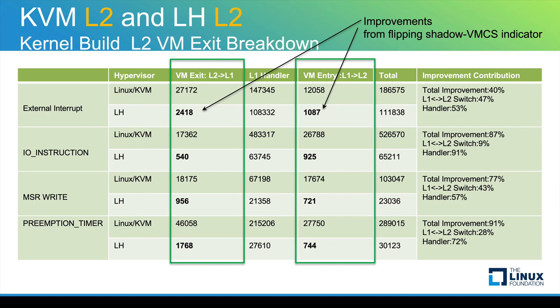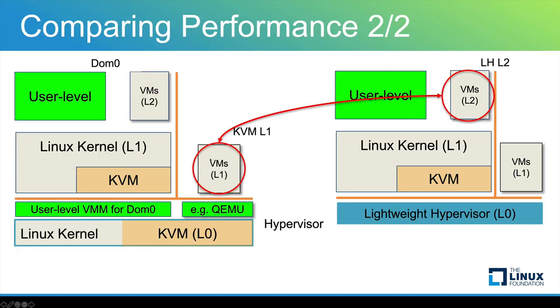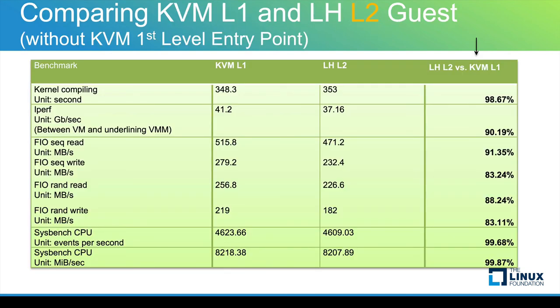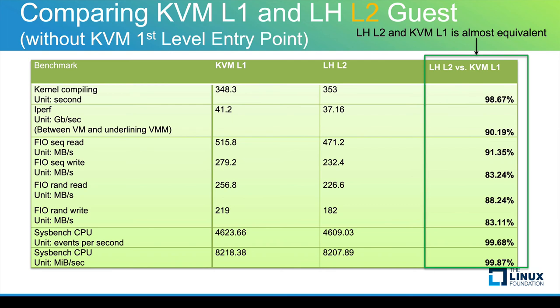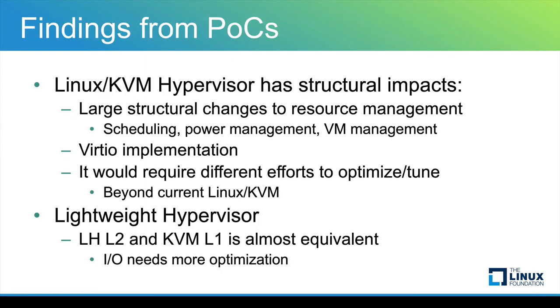If we compare KVM-L1 versus the L2 on the lightweight hypervisor, the result is it's almost the same. We have some regression in the IO area at this point, but this is a first implementation so we don't have any optimization for IO at this point. The performance looks good overall. We don't have another optimization like KVM fast entry point handling yet. So today the L2 VMs on the lightweight hypervisor run purely in a nested way.